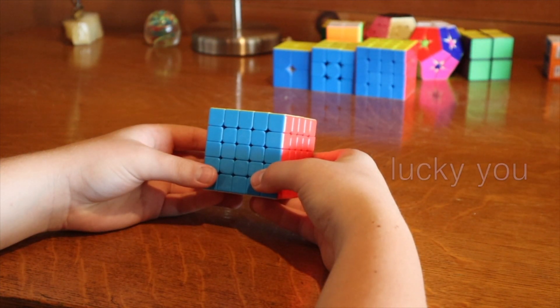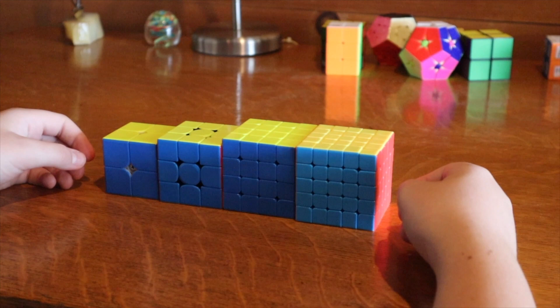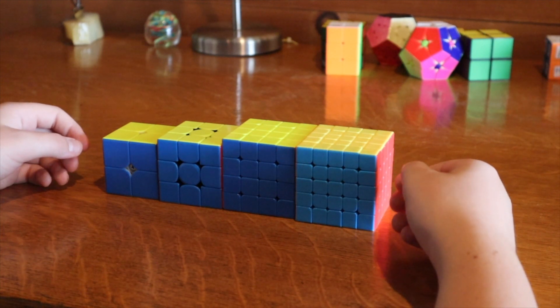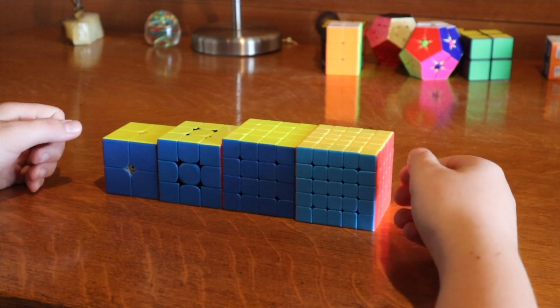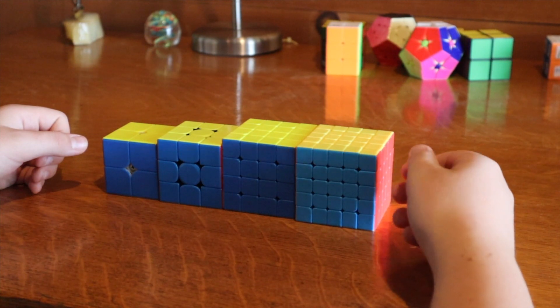5x5 uses the exact same notation. For all of these cubes, there are 3 cube rotations. You probably won't need to use them very often, but they're still good to know.